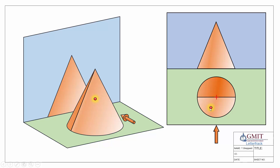As we take our point and roll it around onto the side, the path we get is a circular arc with its center point on the apex of our cone. That is our circular arc as we roll the point around the cone. We roll it onto the extreme generator, and when we project that back into our front elevation it's going to be on our outside edge — our extreme generator in elevation.